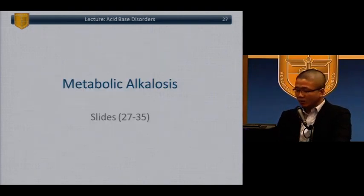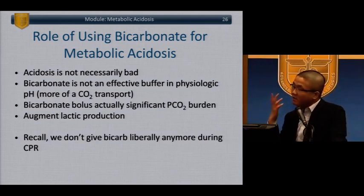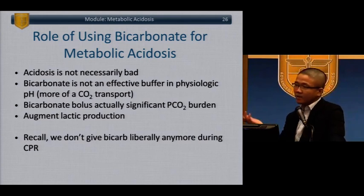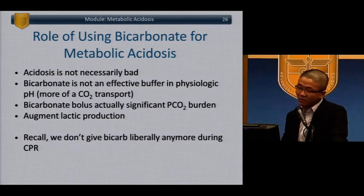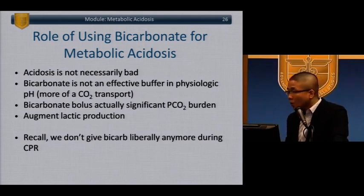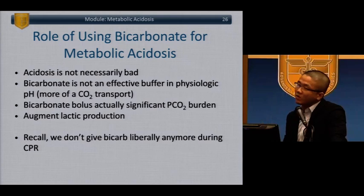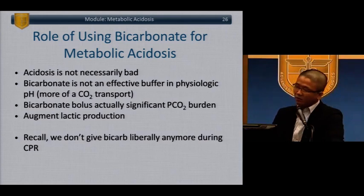When do we use bicarb? Two populations: one is a very profound acidemia, like a pH of 7.15, where the myocardium is very irritated and enzymes won't function properly. The most important patient population for bicarb are renal failure patients — because they cannot reabsorb bicarb; they have bicarb loss and lack the mechanism to reabsorb it. So in renal failure patients, we give bicarb.